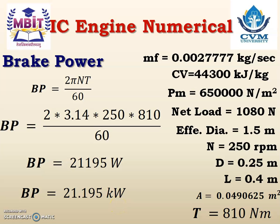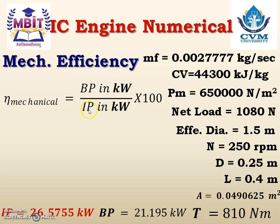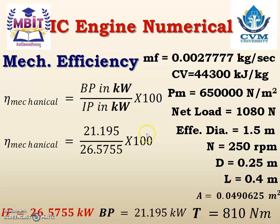We have calculated the indicated power and the brake power. The next parameter to calculate is mechanical efficiency. Mechanical efficiency = (brake power / indicated power) × 100. Substituting the values and calculating, mechanical efficiency = 79.754%.